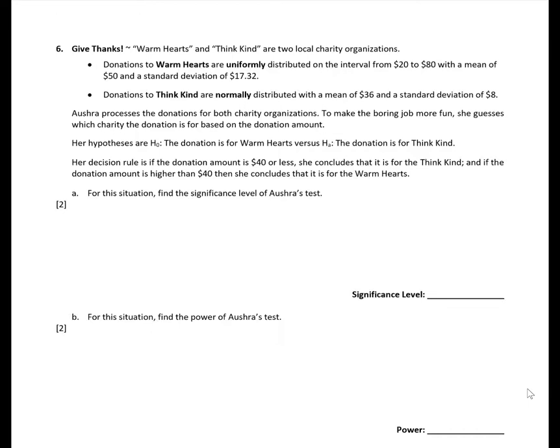Now let's go through question six. Warm Hearts and Think Kind are two local charity organizations. Donations to Warm Hearts are uniformly distributed on the interval from $20 to $80, with a mean of $50 and a standard deviation of $17.32. Donations to Think Kind are normally distributed with a mean of $36 and a standard deviation of $8.